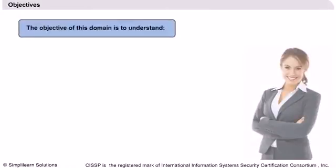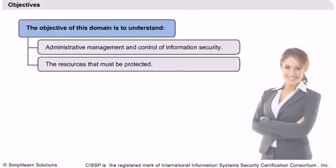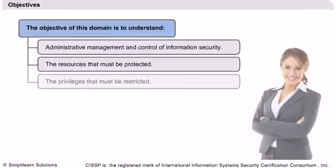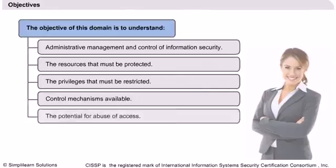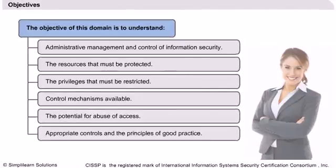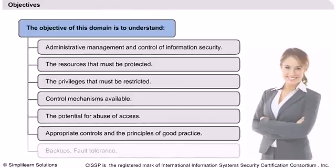According to the ICS-2 Candidate Information Bulletin, a CISSP candidate is expected to know the resources that must be protected, the privileges that must be restricted, the control mechanisms available, the potential for abuse of access, the appropriate controls, and the principles of good practice.